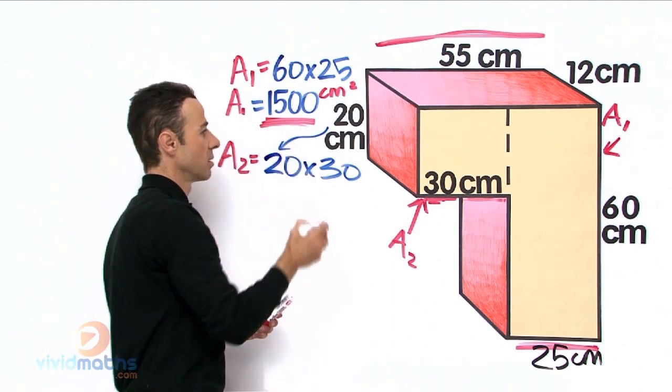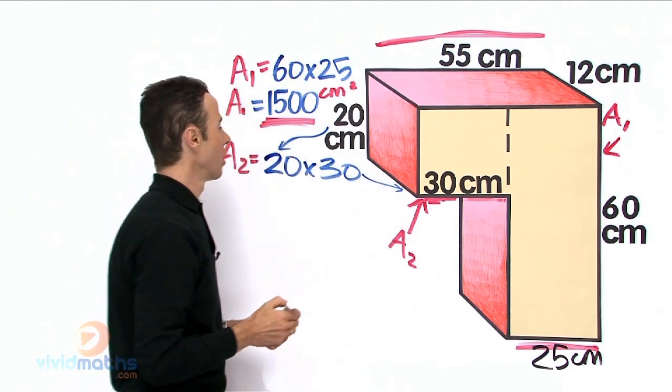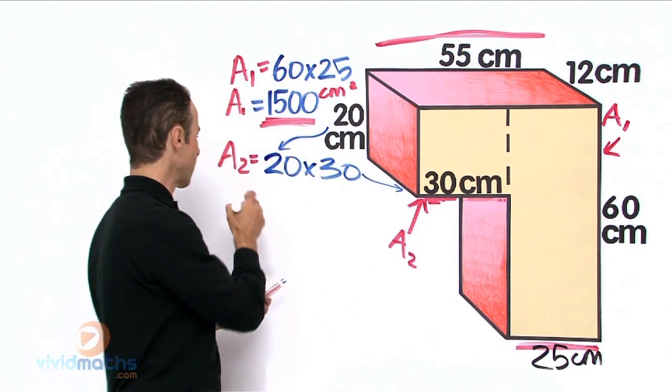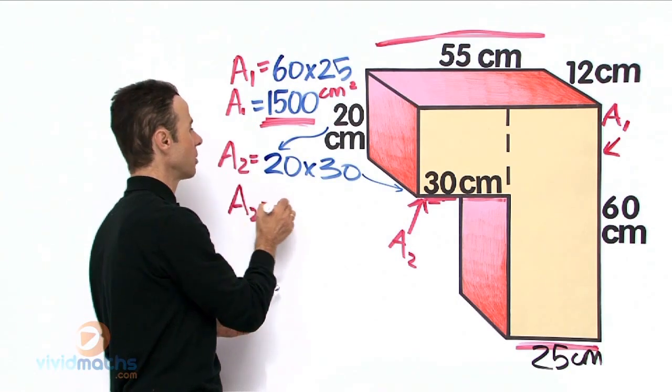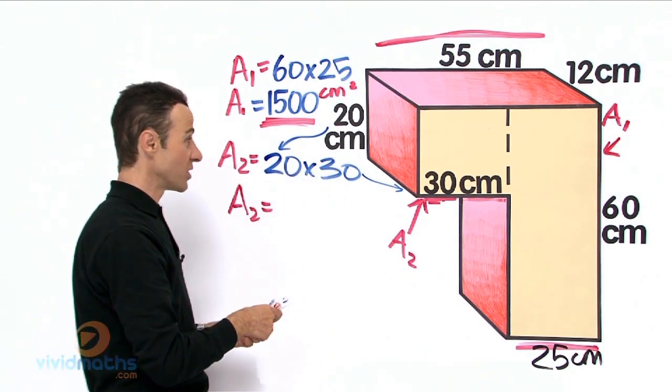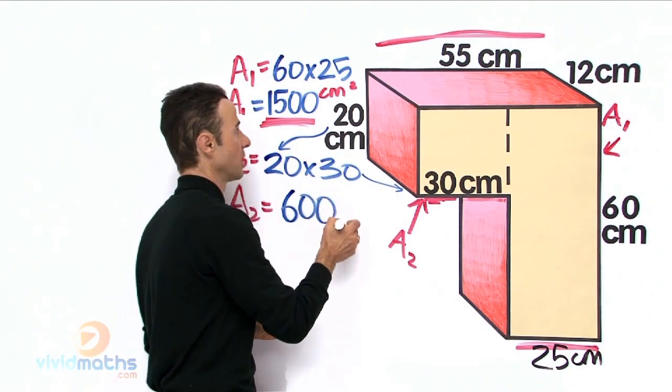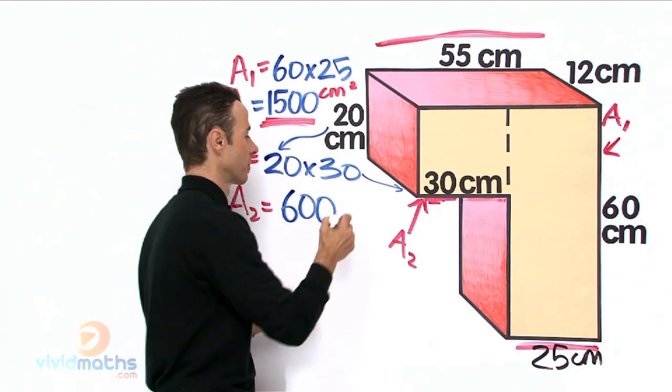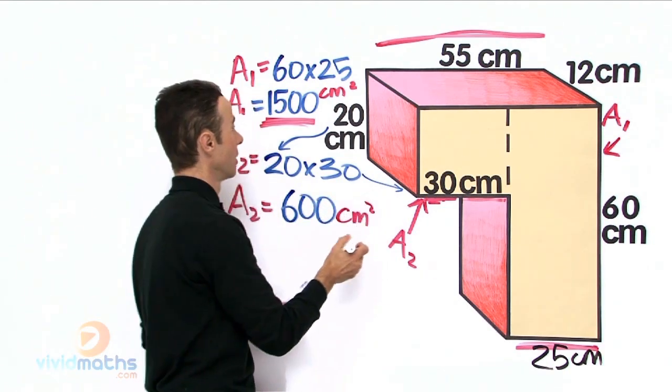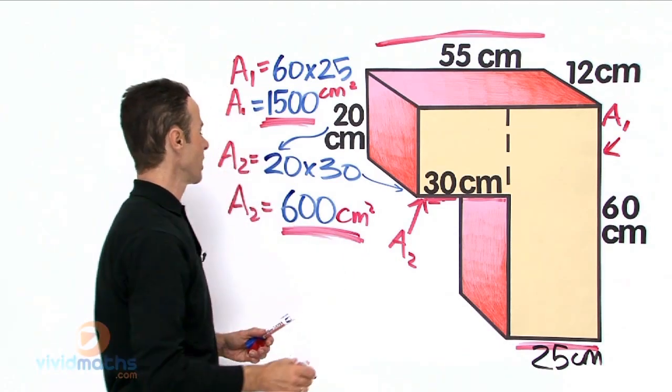That goes there and that goes there. Okay, 20 times 30 on our calculator for area two equals that is going to be 600, isn't it? And that is also a cm squared.